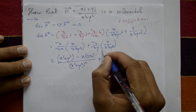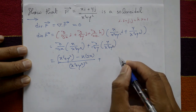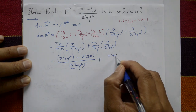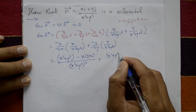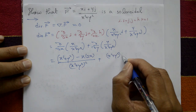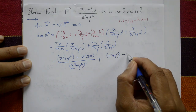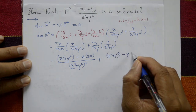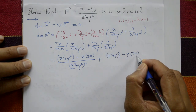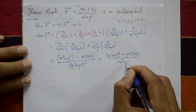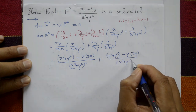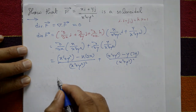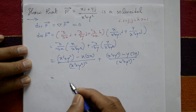Similarly, differentiating y/(x²+y²) with respect to y using the quotient rule: x²+y² times 1, minus y times the derivative of (x²+y²) which is 2y, divided by (x²+y²) squared.